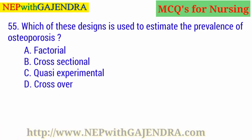Which of these designs is used to estimate the prevalence of osteoporosis? A. Factorial. B. Cross-sectional. C. Quasi-experimental. D. Crossover. The right answer is B: Cross-sectional.